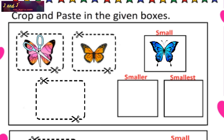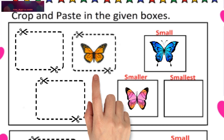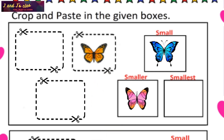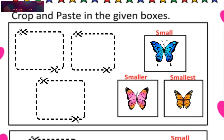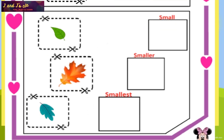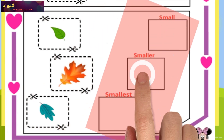Small butterfly — yeah, crop this butterfly and paste on the first box, that is small. Smaller — crop this butterfly and paste on the smaller box. Smallest — yes, crop this butterfly and paste on the smallest box. Next question: there are three leaves and three boxes.